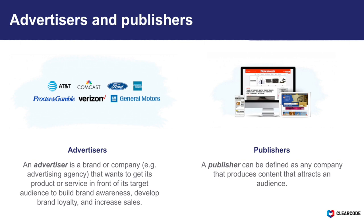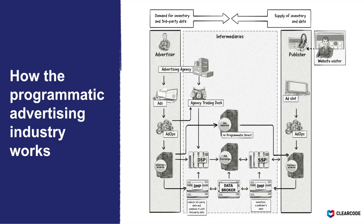Now we'll take a look at the main platforms, processes, and players in the programmatic advertising industry. For any given advertising transaction, there are two key players: an advertiser and a publisher. An advertiser is a brand or company, such as an advertising agency, that wants to get its product or service in front of its target audience to build brand awareness, develop brand loyalty, and increase sales. A publisher can be defined as any company that produces content that attracts an audience — such as a newspaper like the New York Times, or a video streaming service such as Hulu and Netflix. In between an advertiser and a publisher sit multiple different companies, often called intermediaries.